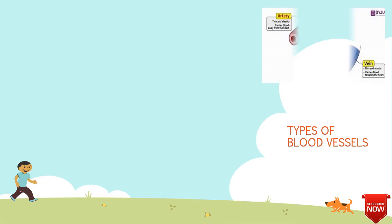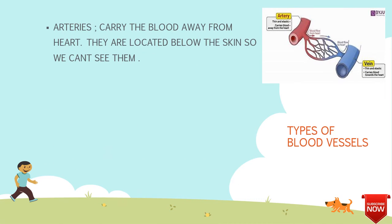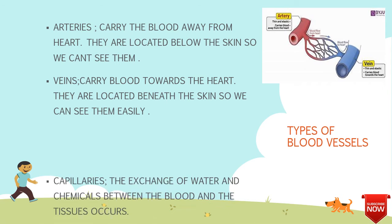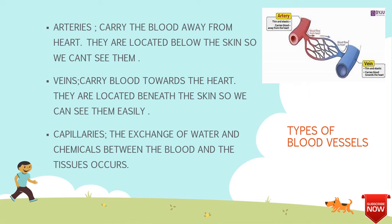Types of blood vessels. You can see the red blood vessel — it is the artery. And the very thin blood vessels are the capillaries. And the veins are the blue-colored blood vessels. Arteries carry blood away from the heart and are located below the skin, so we can't see them. Veins carry blood towards the heart and are located beneath the skin, so we can see them easily. Capillaries are where the exchange of water and chemicals between the blood and the tissues occurs.